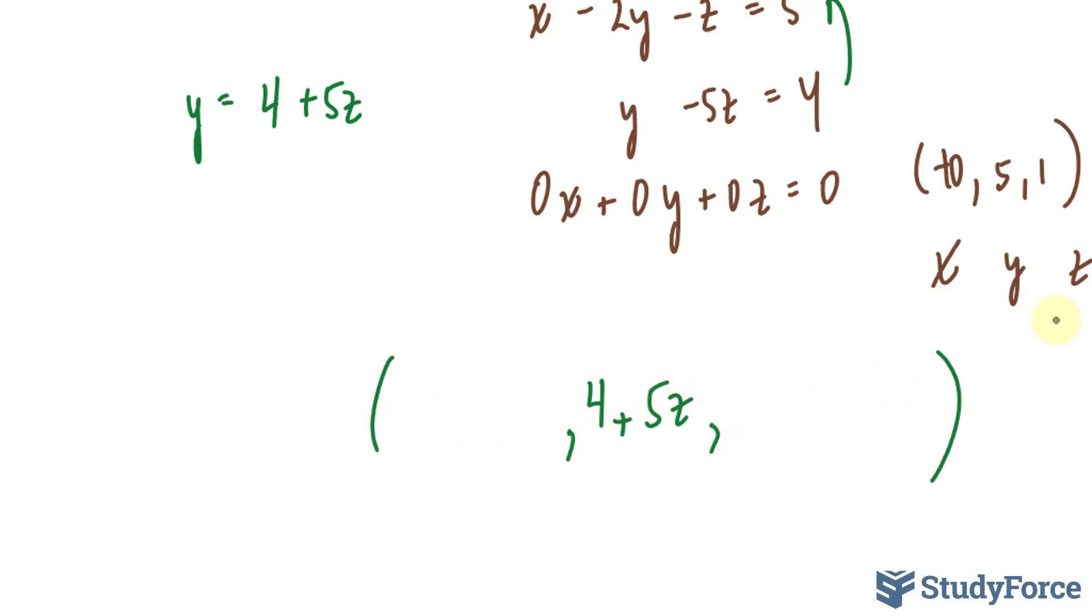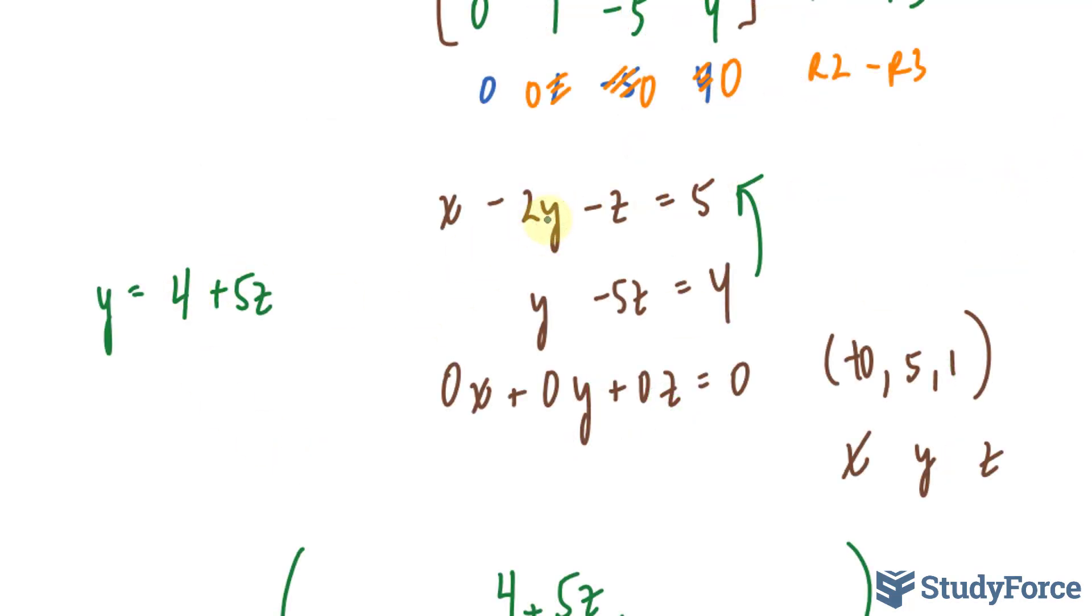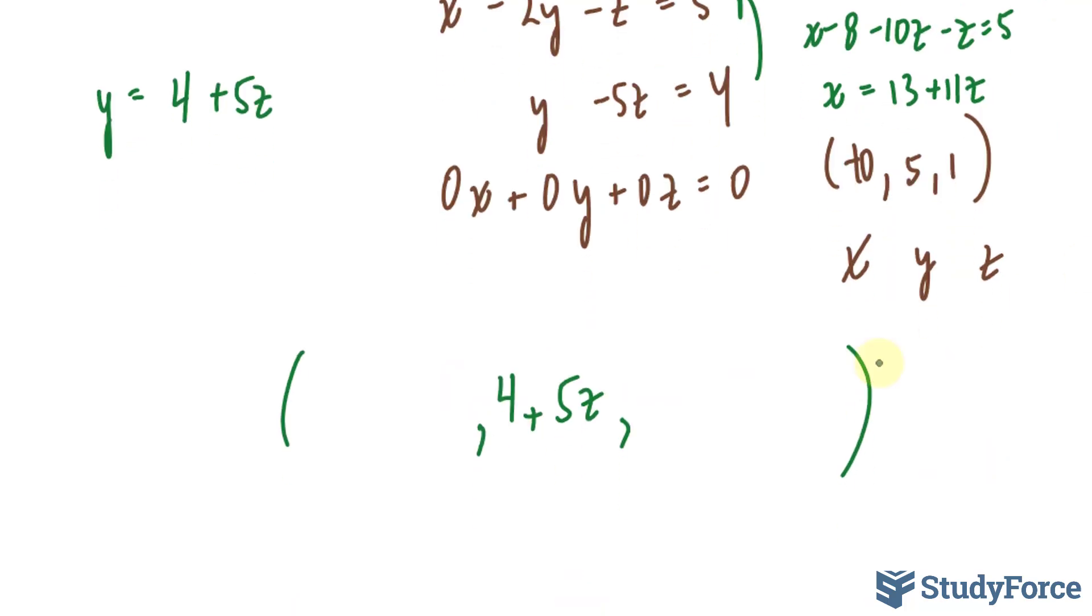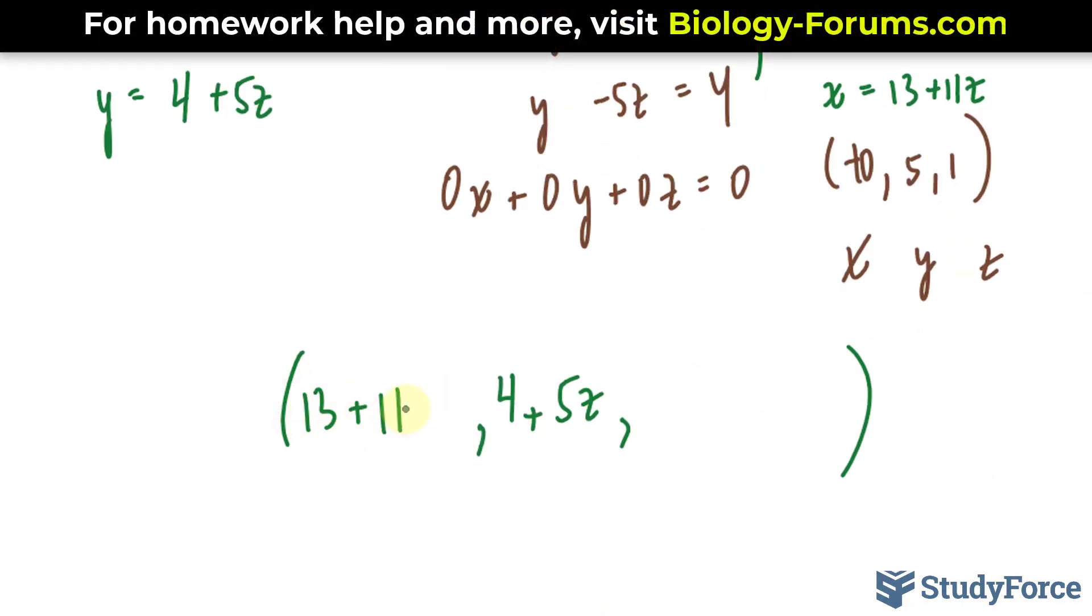Now to find an expression for my x, I'll substitute this into where I have the y here. So I have x minus 2 times 4 plus 5z minus z is equal to 5. Expanding this part, I have x minus 8 minus 10z minus z is equal to 5. Solving for x, I get 5 plus 8, which is 13. Subtracting these two, I have minus 11, bringing that over, I get plus 11z. So I have 13 plus 11z, and for this expression, I can simply say that it's z.